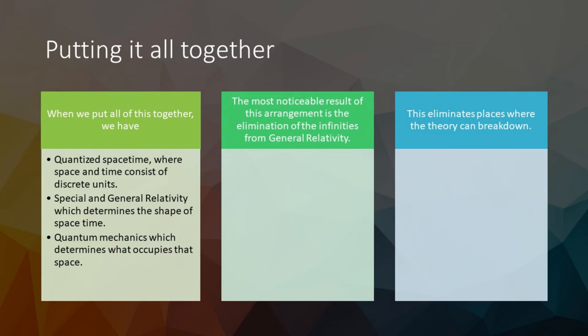Putting all of this together, we have quantized space-time, where space and time consist of discrete units. Especially in general relativity, which determines the shape of space-time, and quantum mechanics, which determines what occupies that space. The most noticeable result of this arrangement is the elimination of the infinities from general relativity. This eliminates the places where the theory can break down.